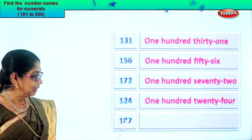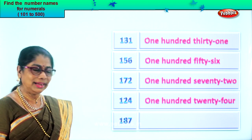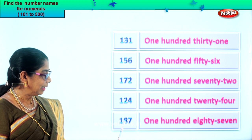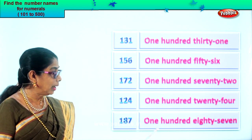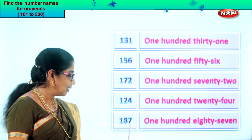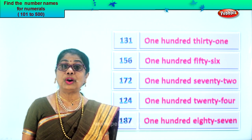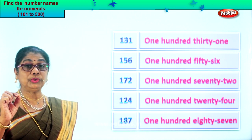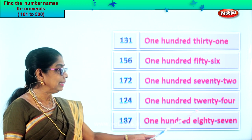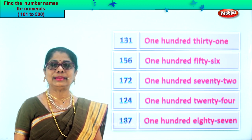Next numeral: seven in the ones place, eight in the tens place, one in the hundreds place. Read: one hundred eighty-seven. So first you write one hundred, then you write eighty-seven. In writing down the number's name, all you need to know is the spelling of hundred and then the numbers — eighty, seventy, twenty and so on. If you know the spelling, it's very easy to write the numbers.